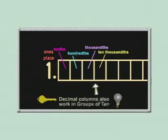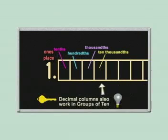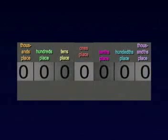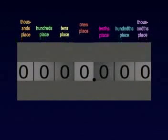The decimal columns also work in groups of 10. The ones place, if not one itself, is central to all notation, not the point. So how do we get the values of the decimal columns?